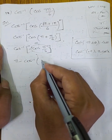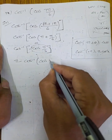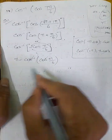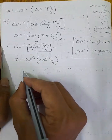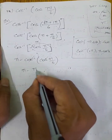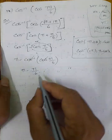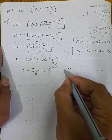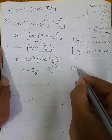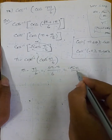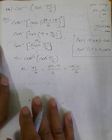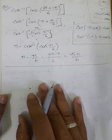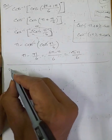So cos inverse of cos(π/6) — the cos inverse and cos cancel — giving π minus π/6 = (6π minus π)/6 = 5π/6. The answer to the 19th question is 5π/6.